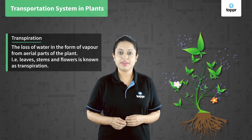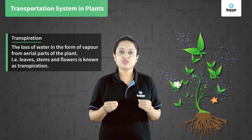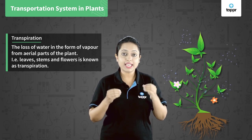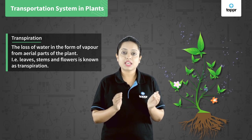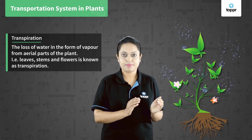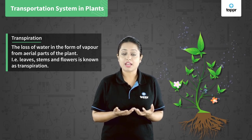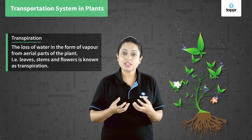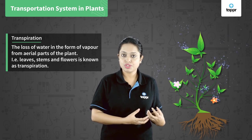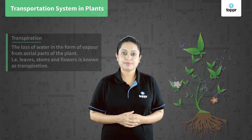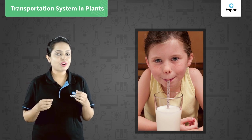Transpiration in leaves mainly occurs through stomata. Due to the loss of water molecules from all the aerial parts of the plant, these parts are left with less water. As a result, this creates suction, and because of this suction, water is pulled upwards from the xylem cells of the roots to the leaves. This is very much similar to the way we suck drinks with a straw.